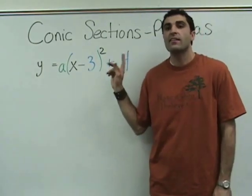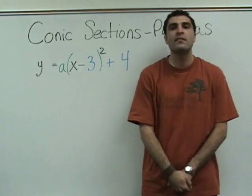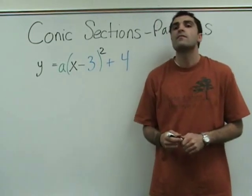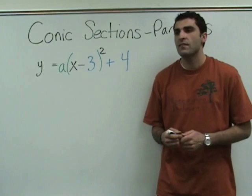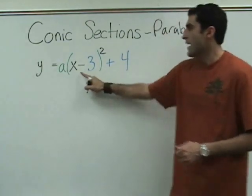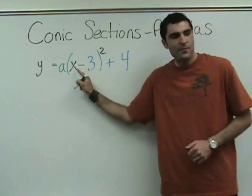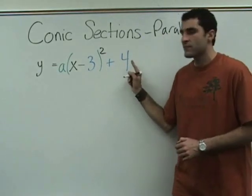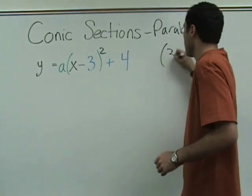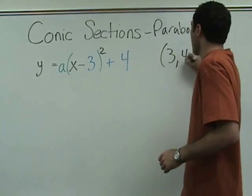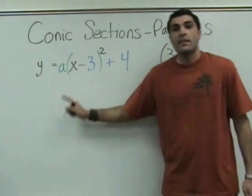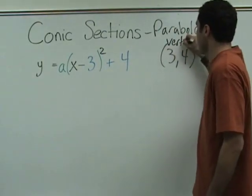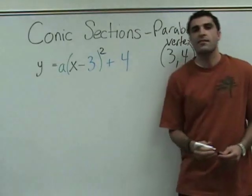So what is hiding in here? The vertex. Can anyone guess what the vertex would be? Negative 3? So is it negative 3, 4? No — it's 3, 4. It's kind of like the opposite of the sign in here, and then the actual sign out here. That's how I remember it. So 3, 4 — this is the vertex.